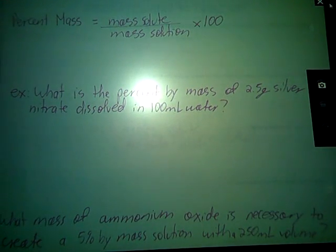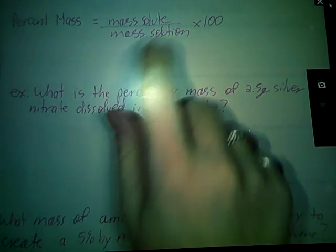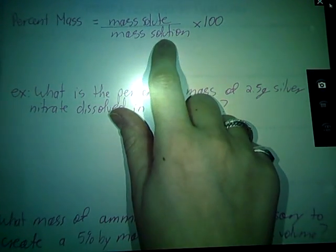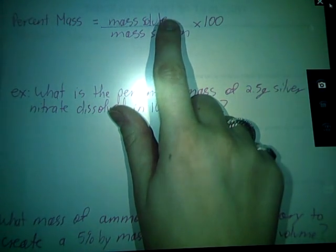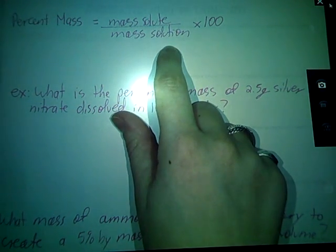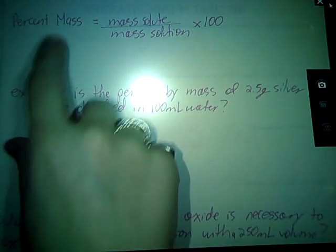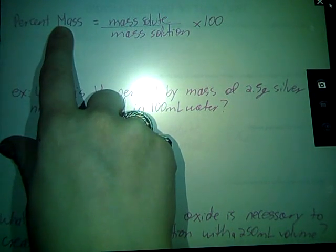All right, percent mass is a fairly common unit when you're talking about actual in-the-lab instructions. Percent mass is yet another concentration unit, and it is calculated by dividing the mass of the solute by the mass of the solution. Notice this says solution, not solvent.